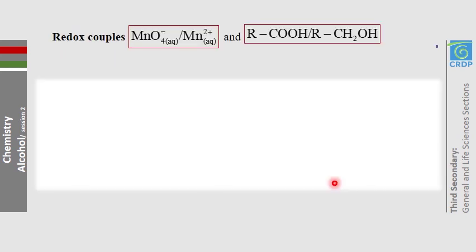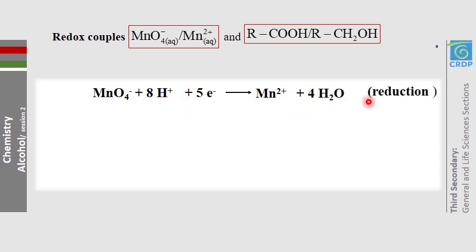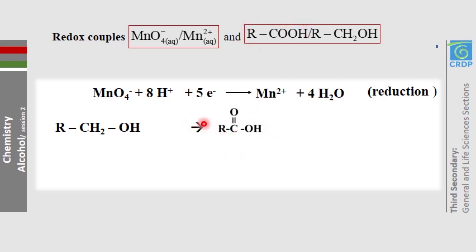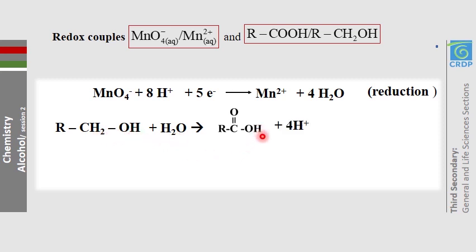Let us write the half-reactions for excess MnO₄⁻. Reduction: MnO₄⁻ → Mn²⁺, add 4H₂O, 8H⁺, 5 electrons. Oxidation: primary alcohol → carboxylic acid. Balance oxygen by adding 1H₂O on the left; 2 oxygen atoms are now balanced. Count hydrogens: 5 on the left, 1 on the right — add 4H⁺ to the right, then add 4 electrons to balance the charge. This is the oxidation half-reaction.